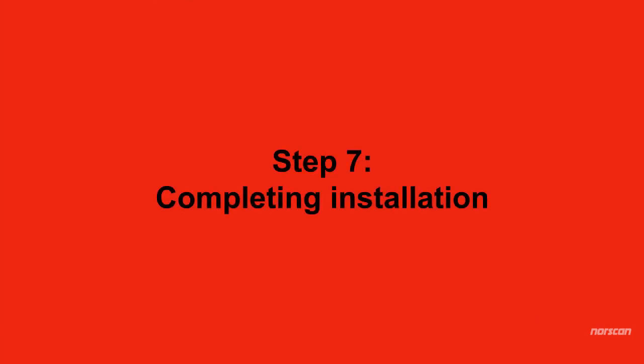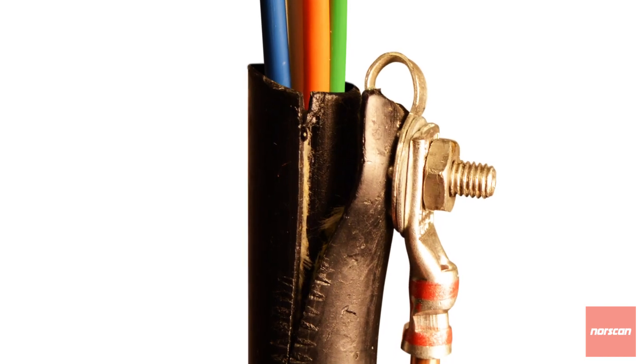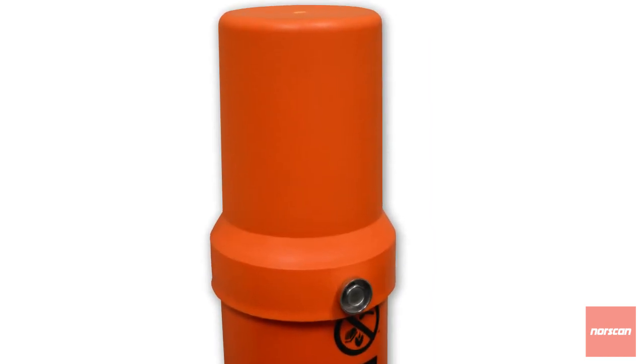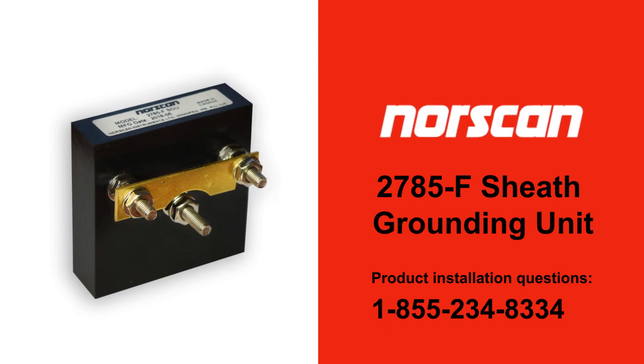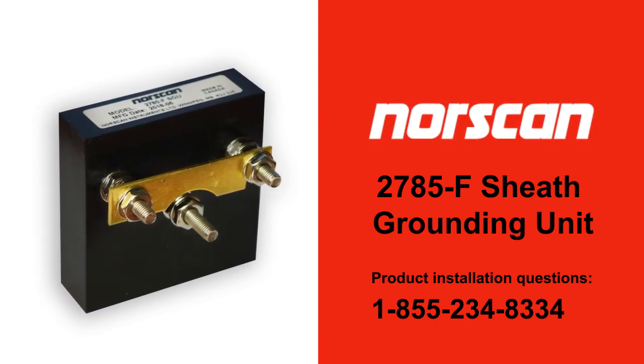Step 7: Completing Installation. Remove temporary ground, then reinstall and secure the pole marker cover. Norscan's 2785F sheath grounding unit installation is now complete.